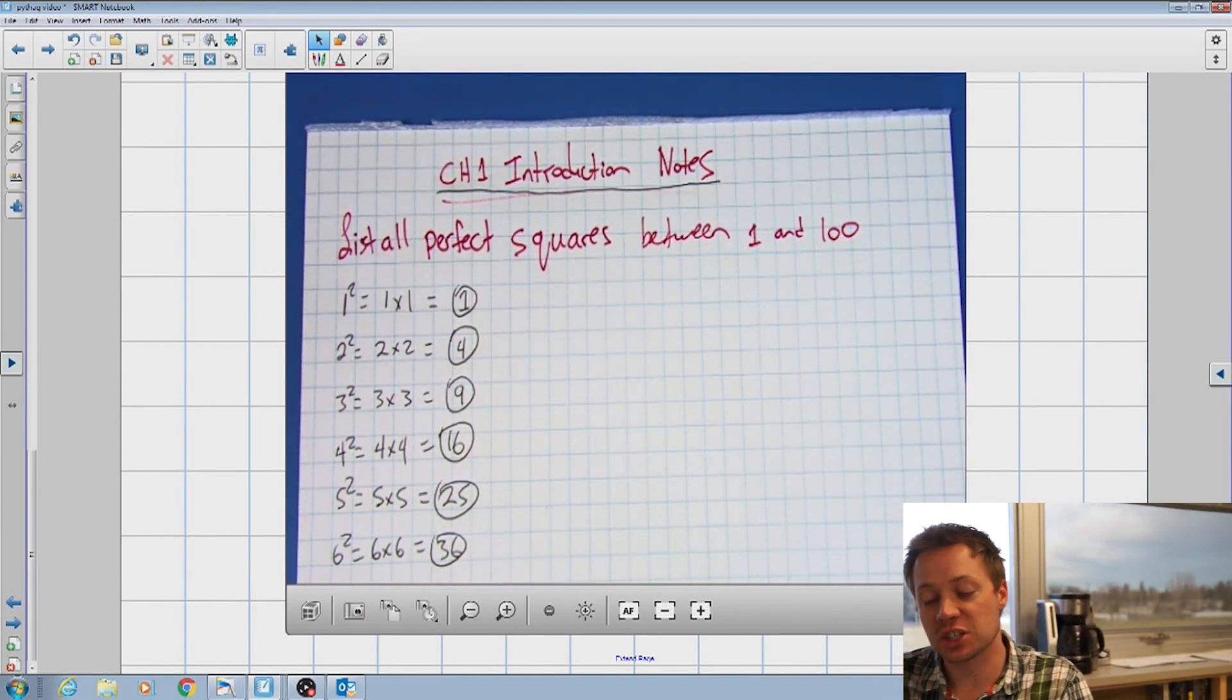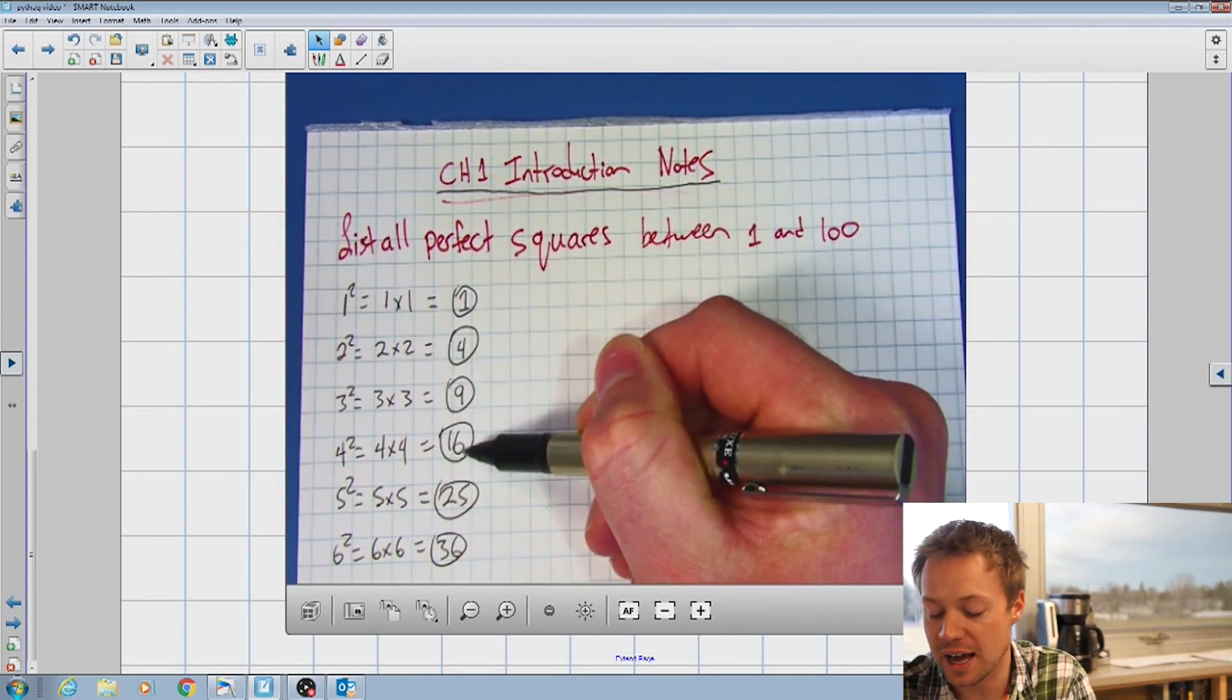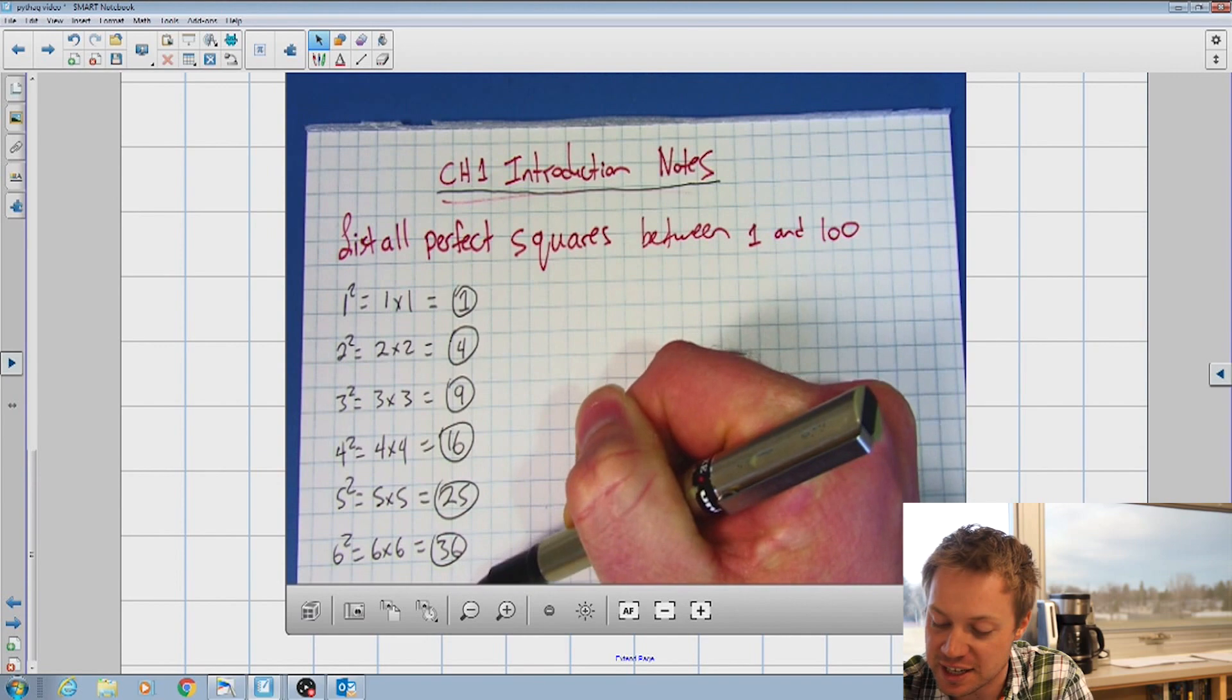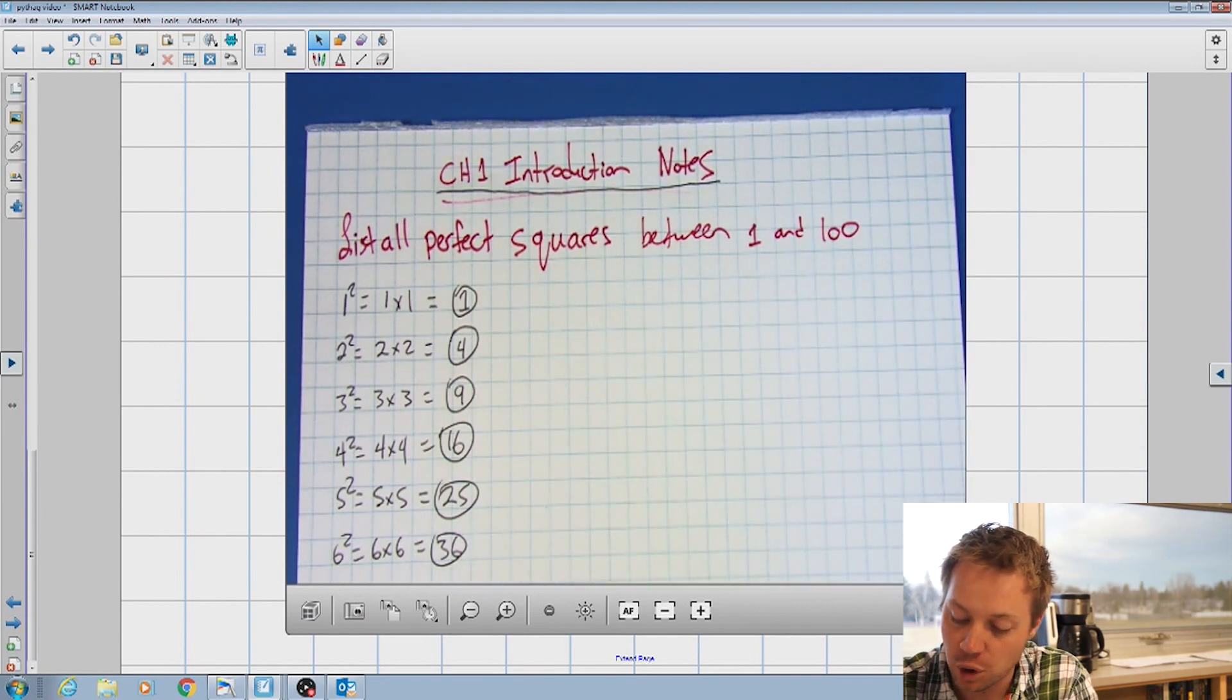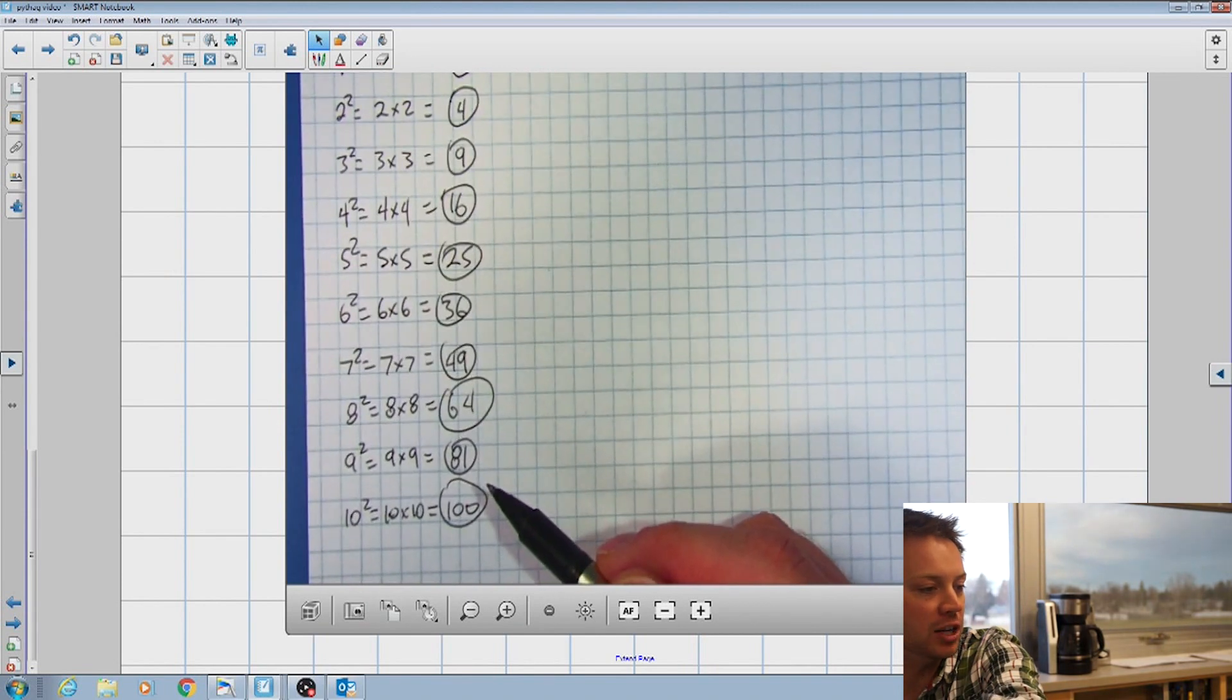So you can see all of my perfect squares between one and 100 are 1, 4, 9, 16, 25, 36, 49, 64, 81, and 100.